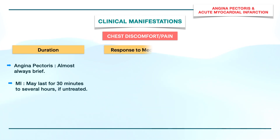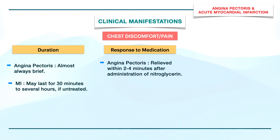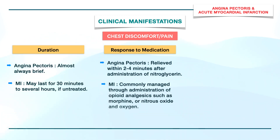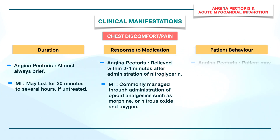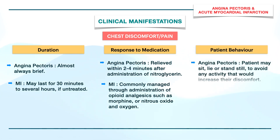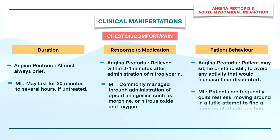Angina pectoris gets relieved within 2–4 minutes after administration of nitroglycerin, while MI is commonly managed through opioid analgesics such as morphine, or nitrous oxide and oxygen. In angina, the patient may sit, lie, or stand still to avoid any activity that increases discomfort, while in MI, patients are frequently quite restless, moving around in a futile attempt to find a more comfortable position.